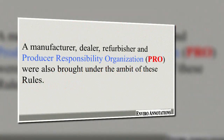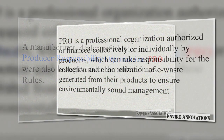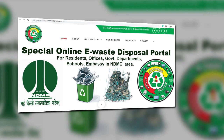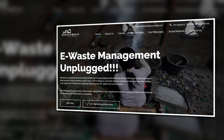Under the 2016 rules, a manufacturer, dealer, refurbisher and Producer Responsibility Organization (PRO) was introduced. A PRO is a professional organization authorized or financed collectively or individually by producers, which can take responsibility for collection and channelization of e-waste generated from their products to ensure environmentally sound management. An option was given for setting up a PRO as an additional channel for EPR implementation. The applicability of the rules was also expanded to cover components, consumables, parts and spares of electrical and electronic equipment.